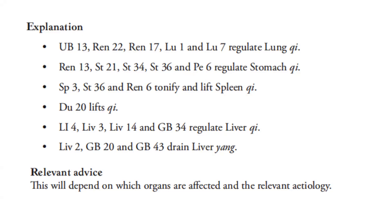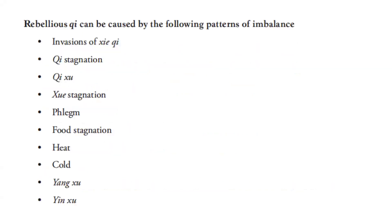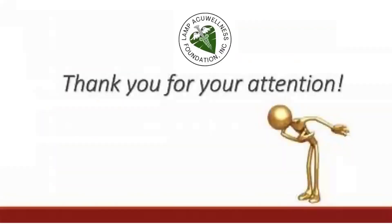Relevant advice will depend on which organs are affected and the relevant etiology. Rebellious qi can be caused by: invasions of pathogenic qi, qi stagnation, qi deficiency, blood stagnation, phlegm, food stagnation, heat, cold, yang deficiency, and yin deficiency.